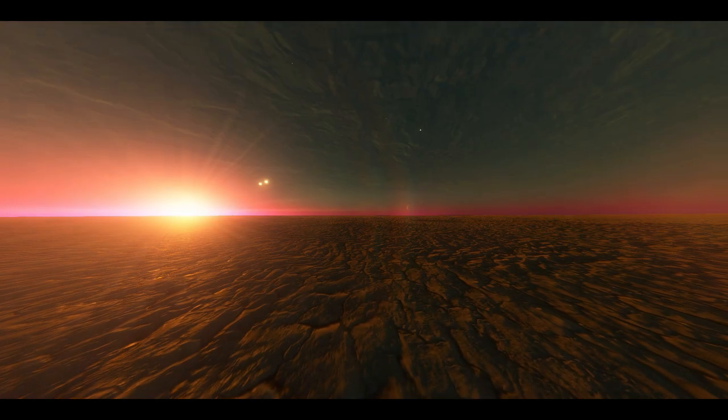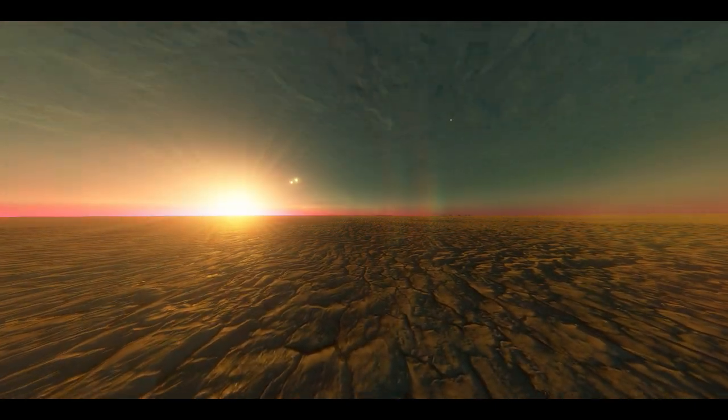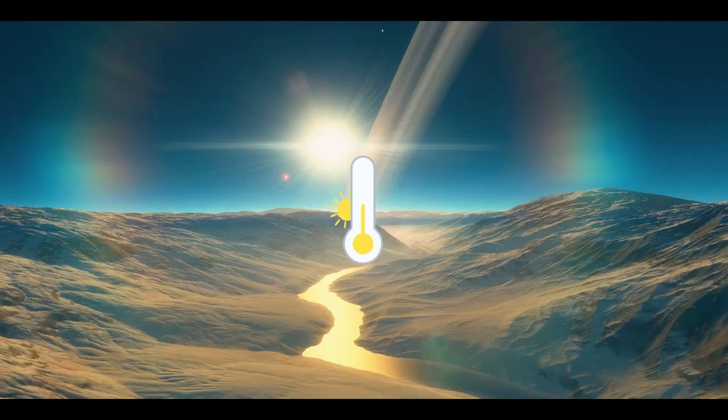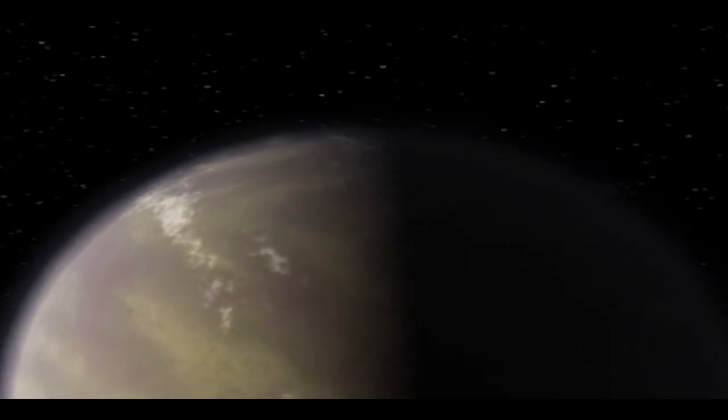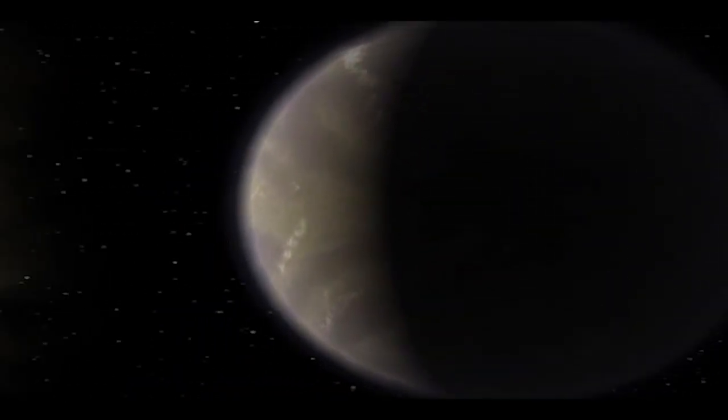Gliese 581c, another planet that orbits Gliese 581, was also thought to have suitable temperatures for life. However, the researchers had calculated the amount of energy the planet reflected in an unrealistic way. Seeger pointed out, for this discovery, no such estimate was made.